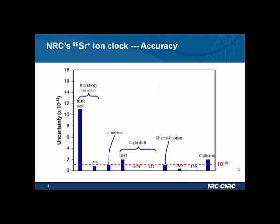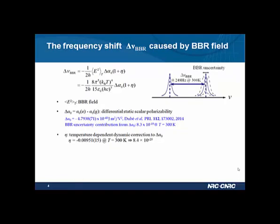Let's take a look at the blackbody radiation shift of the ion clock. The blackbody radiation shift comes from the interaction of the atomic dipole moment and the electric field of the blackbody radiation. This shift can be expressed in an equation. Besides physical constants, there are three quantities to study carefully: the blackbody radiation field; delta alpha naught, the differential static polarizability between the ground and excited state; and the temperature-dependent dynamic correction to this differential scalar polarizability, which can be calculated theoretically very accurately.